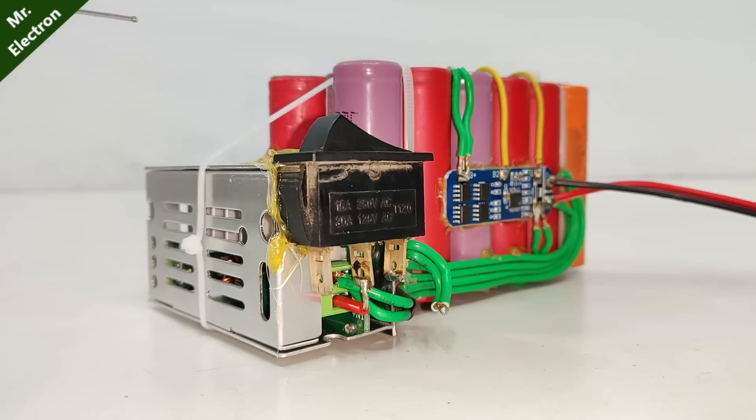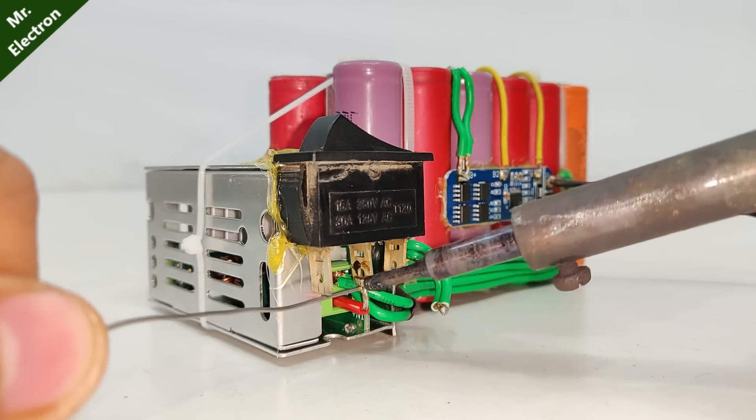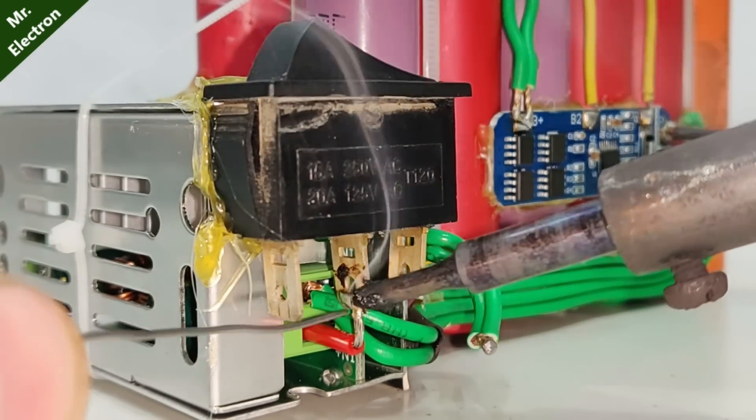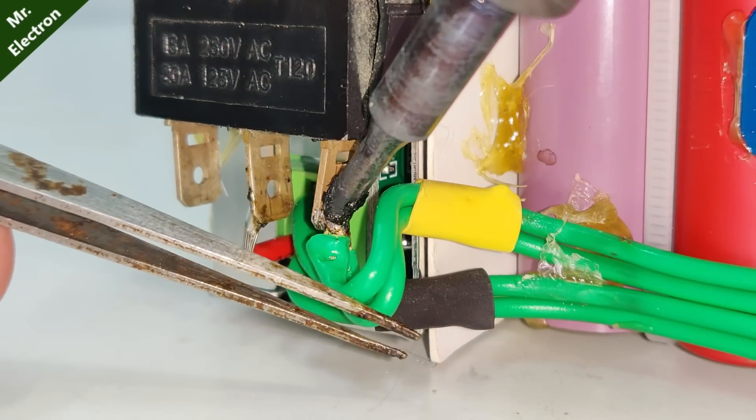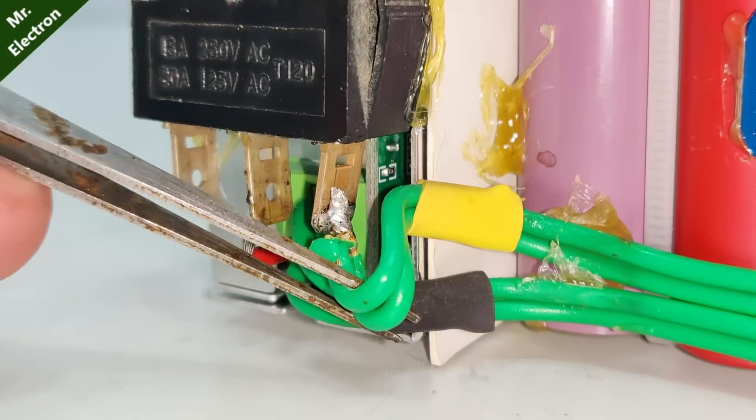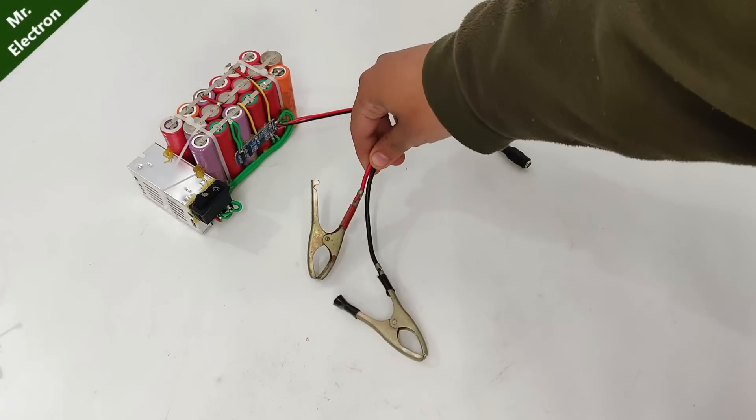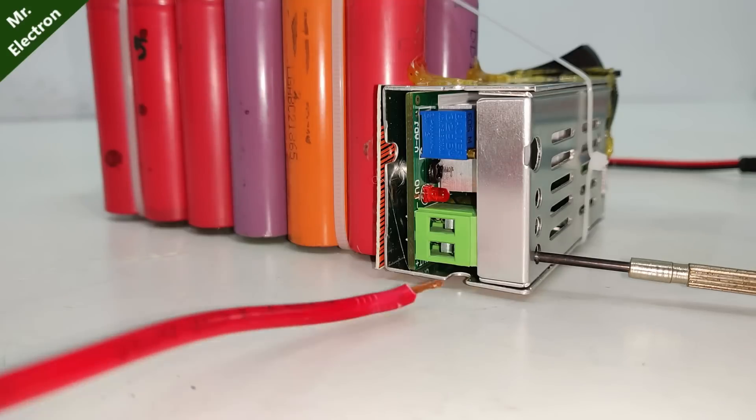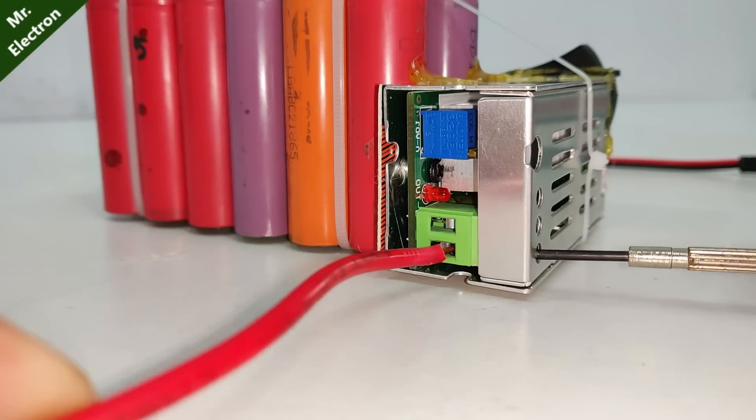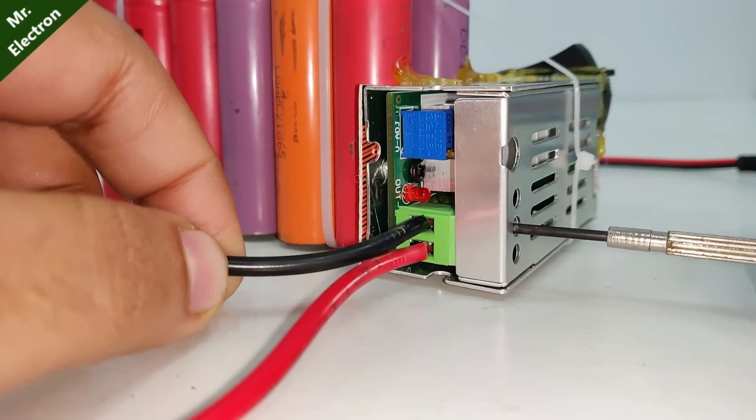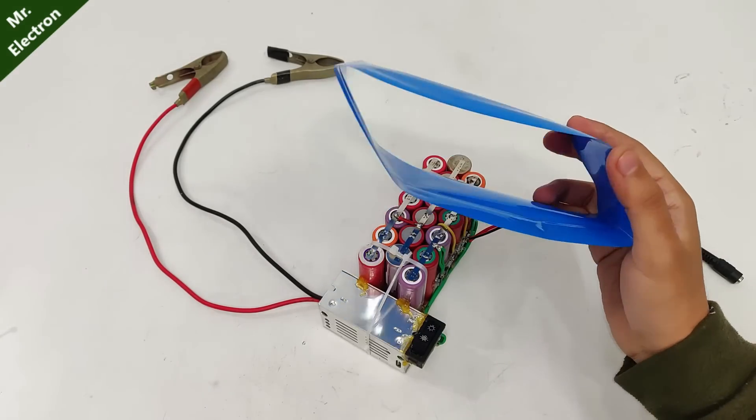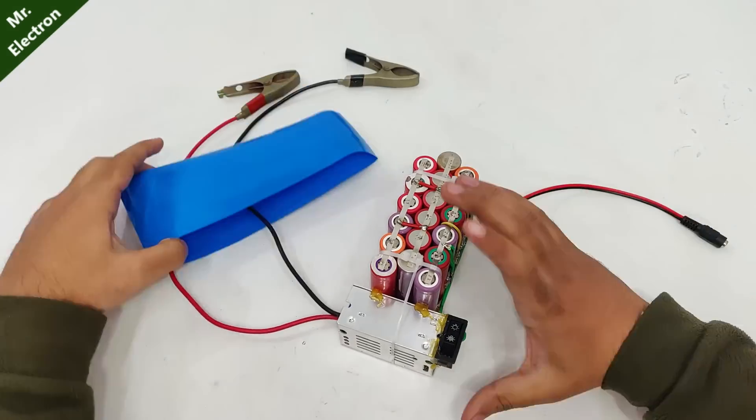After that take a 2 ampere switch and hot glue it to your buck boost module as shown. Now take your positive red wire and connect it to the middle terminal of the switch. Then take the green wire from the battery pack and connect it to the other terminal of the switch. Next take two battery charging cables and connect them to the output of the buck boost module, red to positive and black to negative. Next take this heat shrink insulation and place it like this.